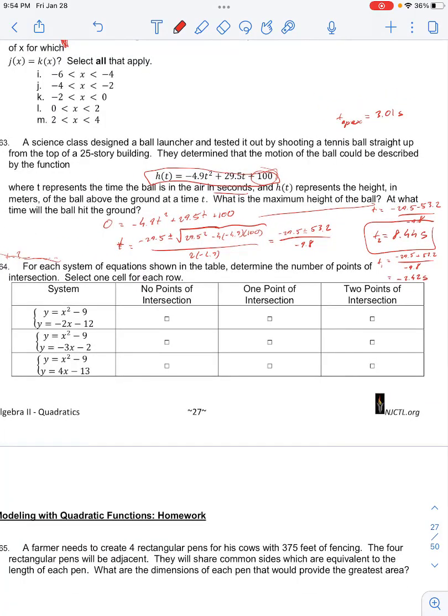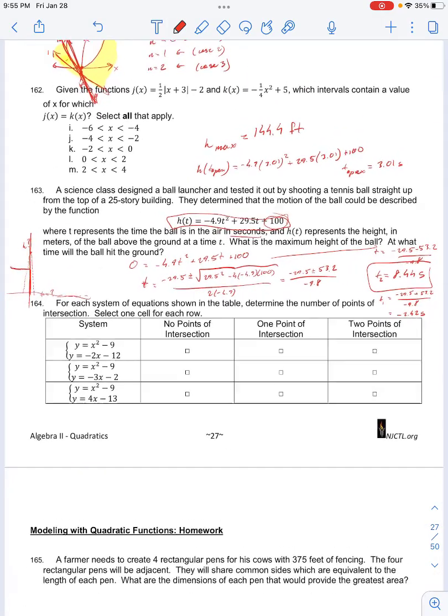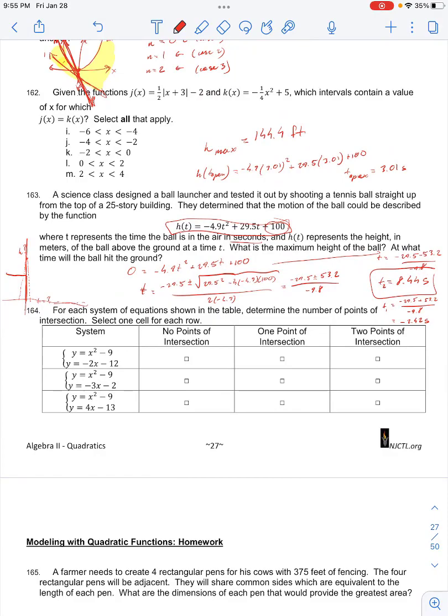So now we can plug this t apex back into our height equation and solve for the maximum height of the ball. So the maximum height would now be t apex equals negative 4.9 times 3.01 squared plus 29.5 times 3.01 plus 100, gives us 144.44 feet. It doesn't tell us the units for height, but I'll just go with feet.